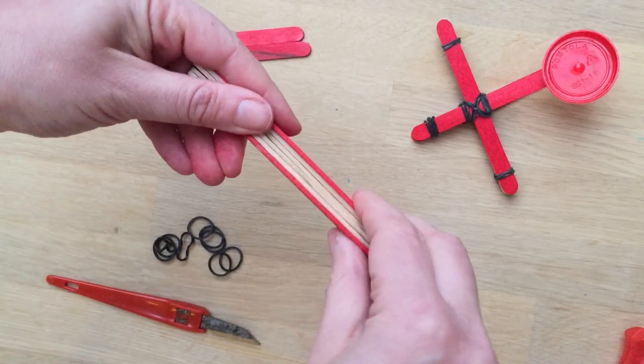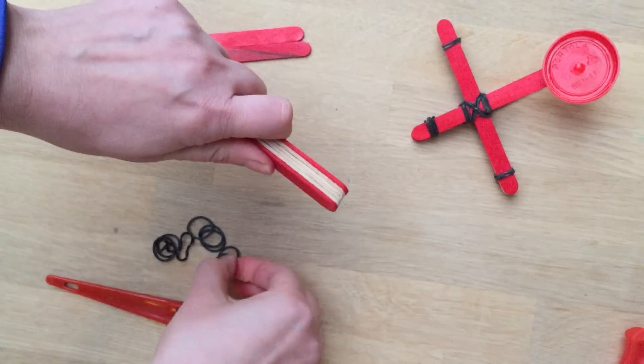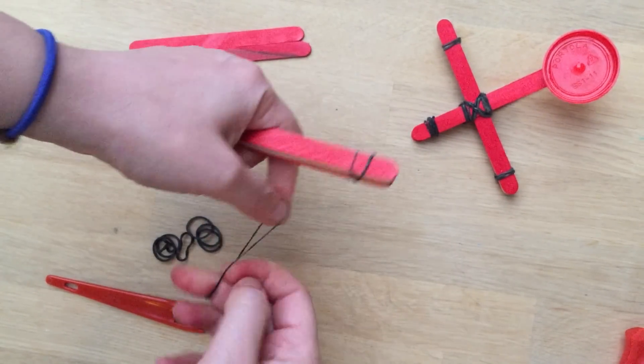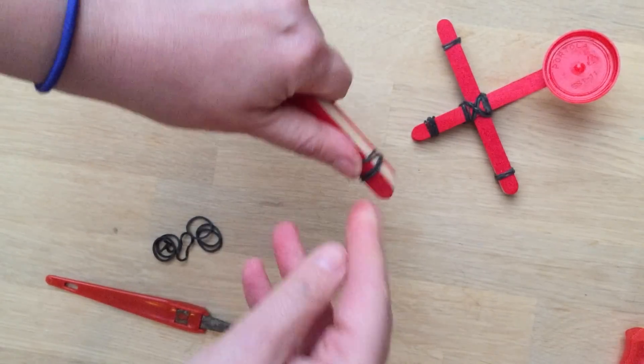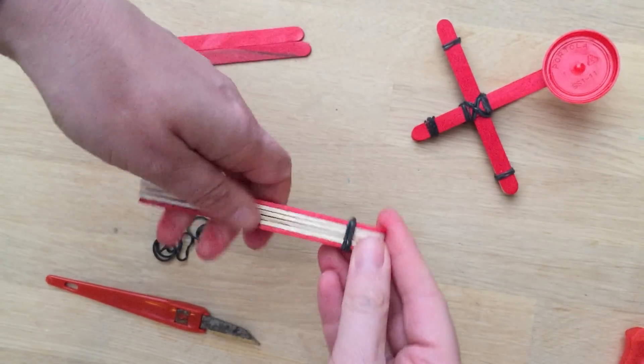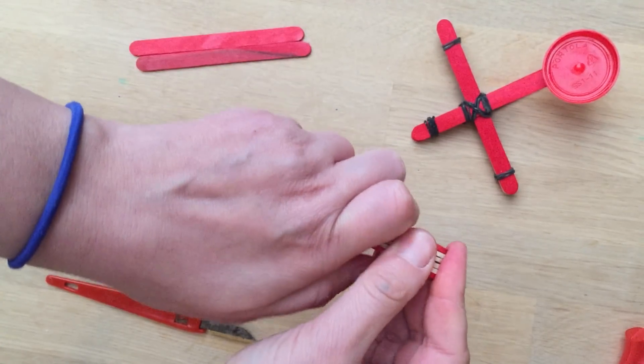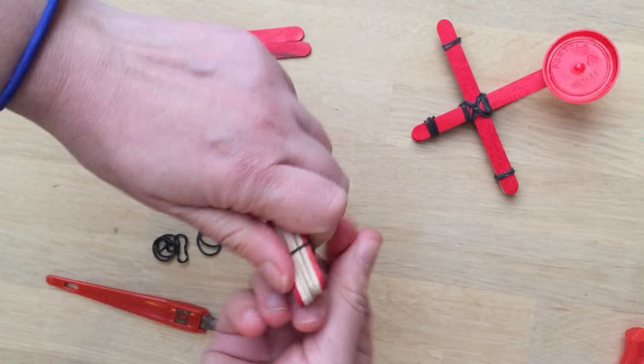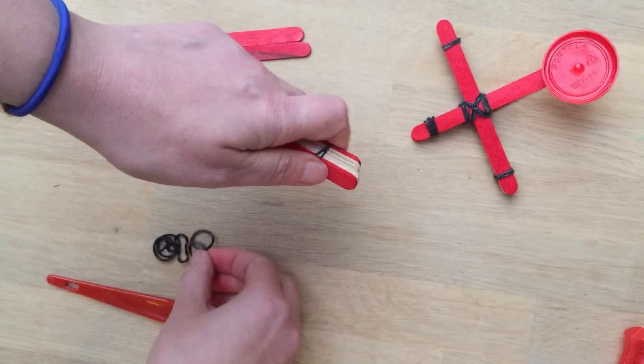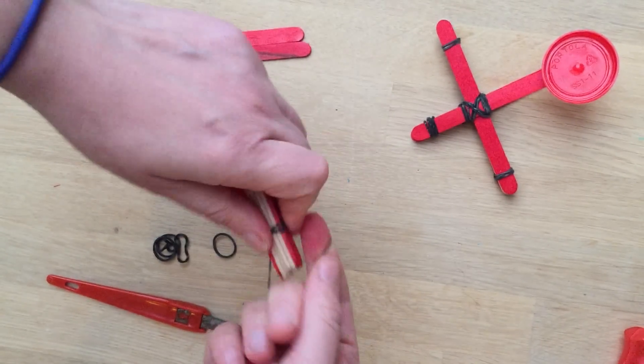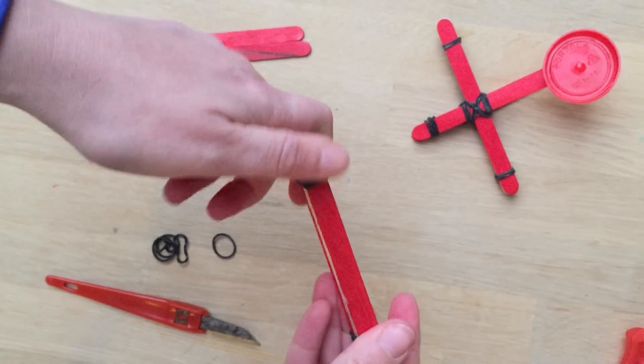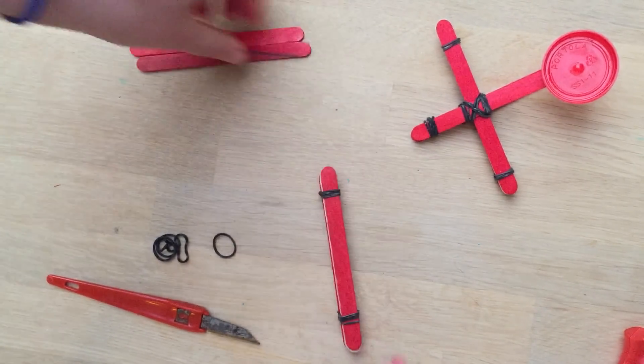And then we added some loom bands at the end. Now loom bands obviously aren't very strong, so because you're using these you'll need more than you would if you used normal elastic bands. But it's a great way of using up things that we've got, because we've got lots of loom bands at home and I don't actually have that many ordinary elastic bands, so this worked out quite well for us. So tighten them like that.